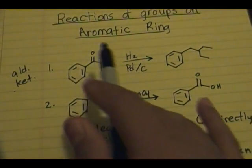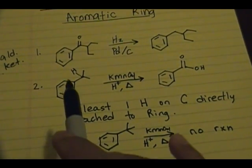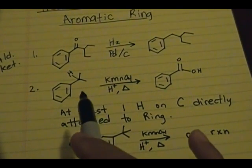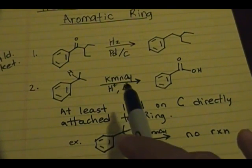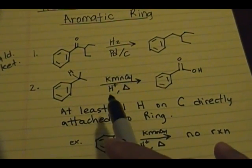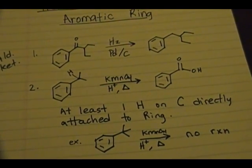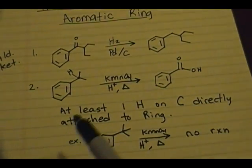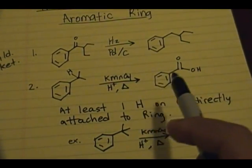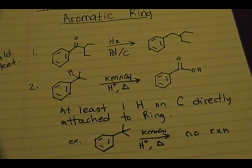The next reaction is when you have an aromatic ring with an alkyl group with at least one hydrogen on the carbon directly attached to the ring. You use potassium permanganate KMnO4, use a proton source like H+, and use heat to give you your carboxylic acid. Any type of alkyl group that fits this criteria will generate the same carboxylic acid product.